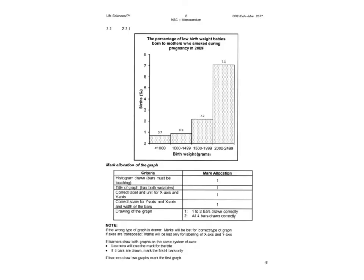Here is the memo answer for your histogram. It's good to study memos to see what markers will look for at the end of the year. They are looking for: bars touching (confirming it's a histogram), a heading, correct labels on the x and y axes — birth weight in grams and percentage of births — correct scaling, and correct drawing of all four bars. There's also a note at the bottom explaining what you'll lose marks for, such as drawing the wrong graph type or transposing the axes — so spend a little time reading through that to avoid those mistakes.